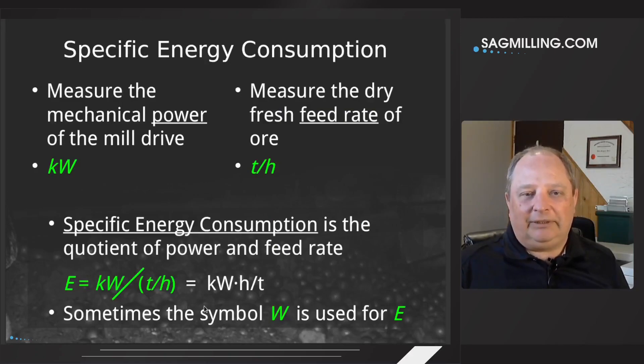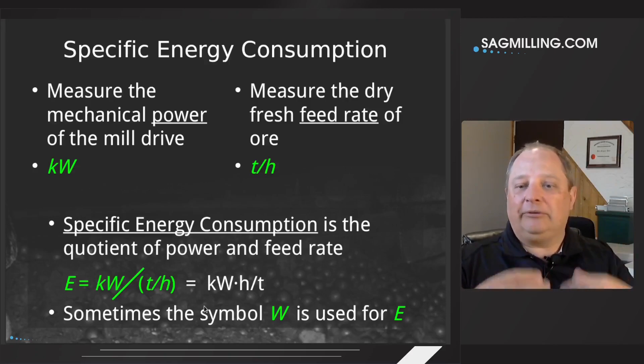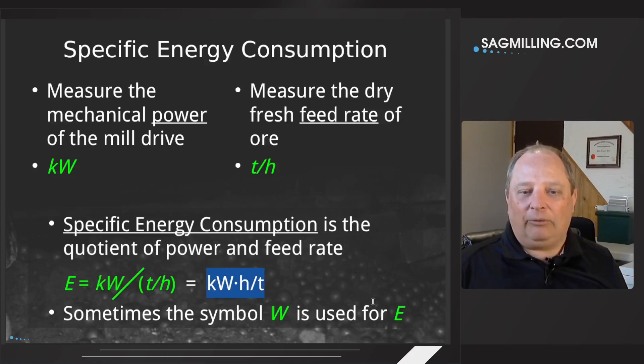So here's the first equation we're going to deal with. It's the specific energy consumption. This is a measure of how much energy is used to grind a particular mass of rock. The way you compute this is you measure the mechanical power of the mill, and we often use the term pinion power of the mill. You measure the dry feed rate of fresh feed going through the milling circuit. So if there's a circulating load, we don't include the circulating load, only the fresh feed that's coming into the circulating load. And the specific energy consumption is just the quotient of the power divided by the throughput. Now, because H here is in the denominator of the denominator, it can pop up on top. And this is normally the way that we will express it as kilowatt hours per ton.